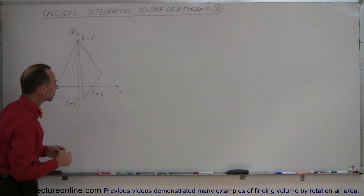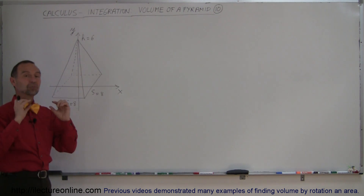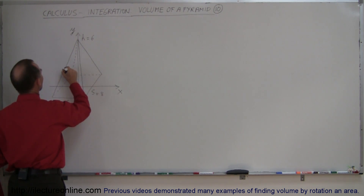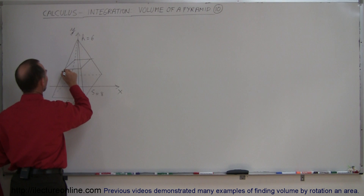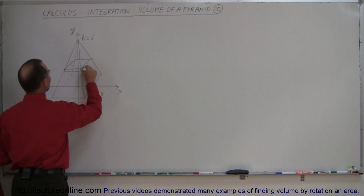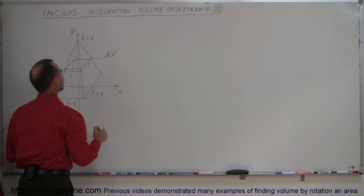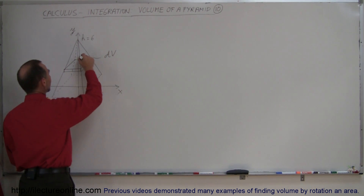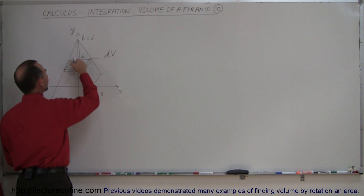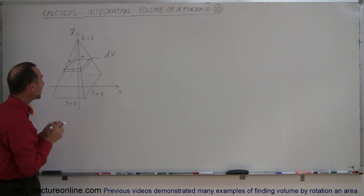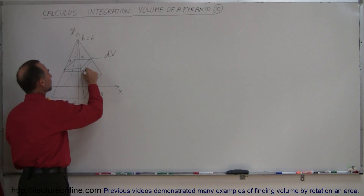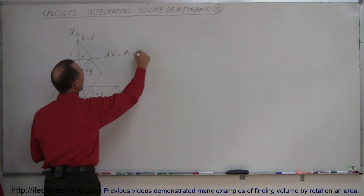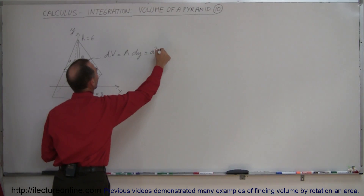So how do we find the volume of something like this? Well, the best way to do it is to find a small little dV — a slice of that pyramid — and what we can do is simply slice it like this. There's my little slice, give it a little bit of thickness, and that's then my dV. We can express dV as: if the sides of this little volume element is a, then we get a by a times the thickness which would be dy. So dV is equal to the area of this slice times dy, and the area is equal to a² dy.